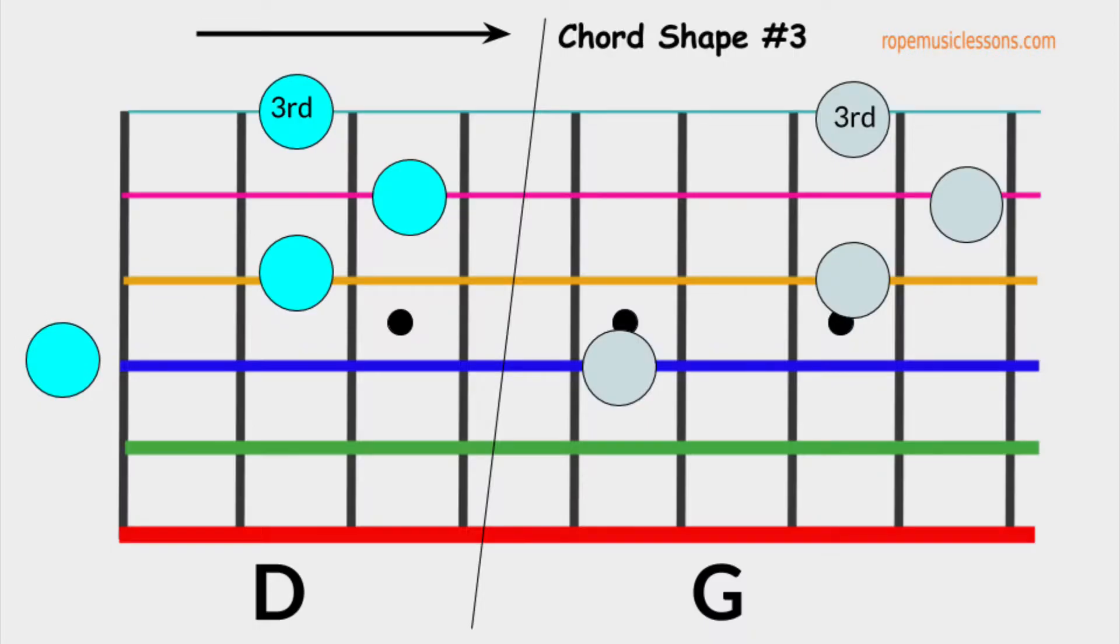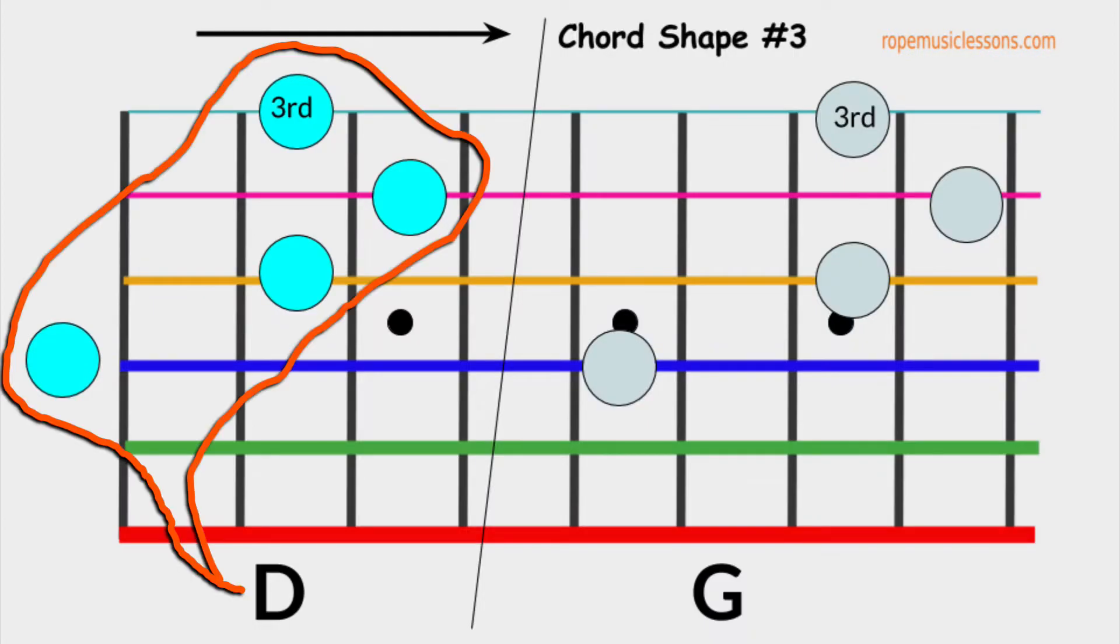This is our chord shape number three. This is a D major chord. The third of D major is the note F sharp. Again, this is a movable chord.